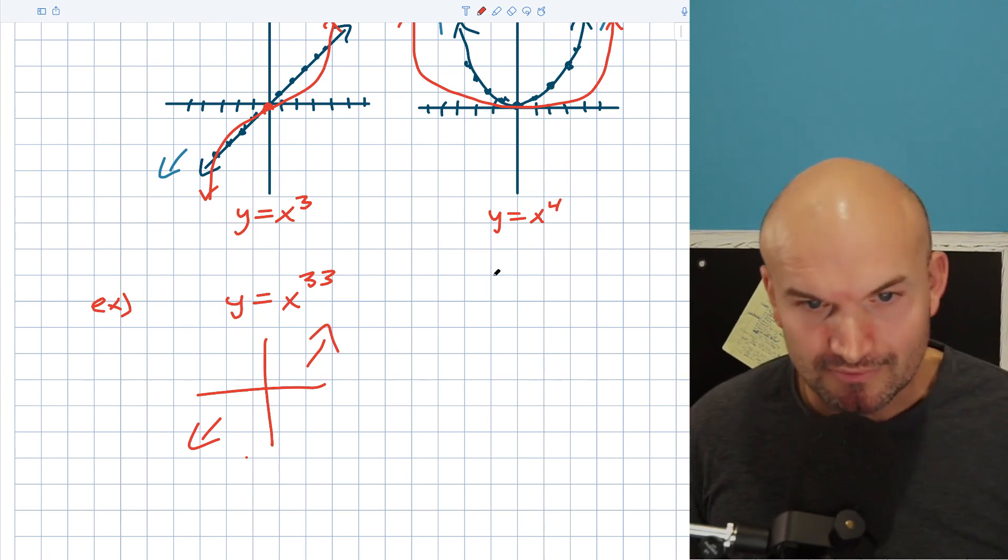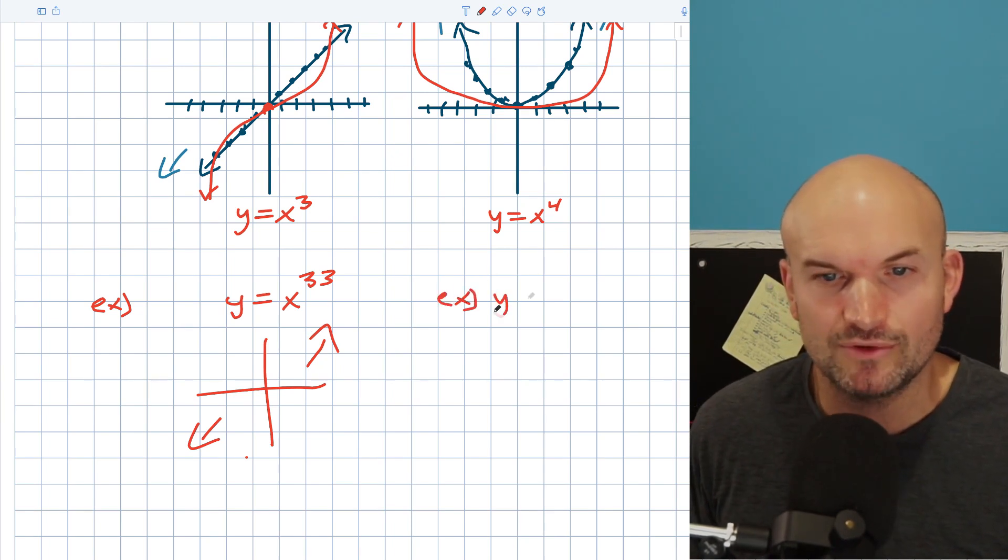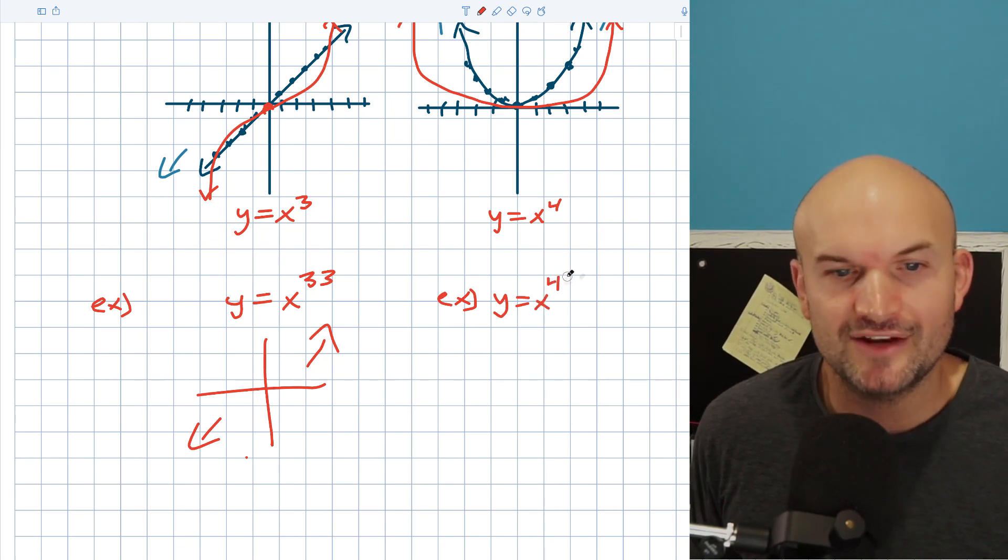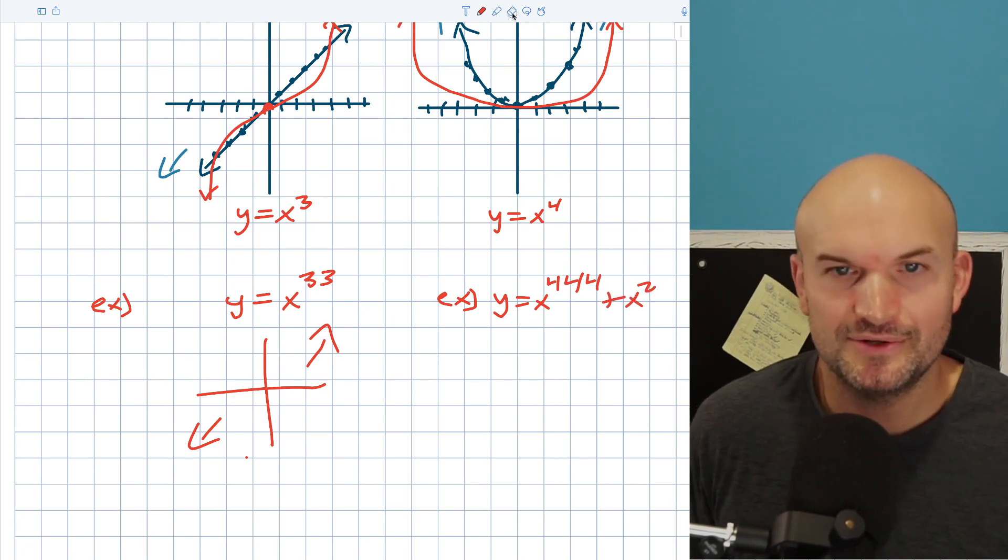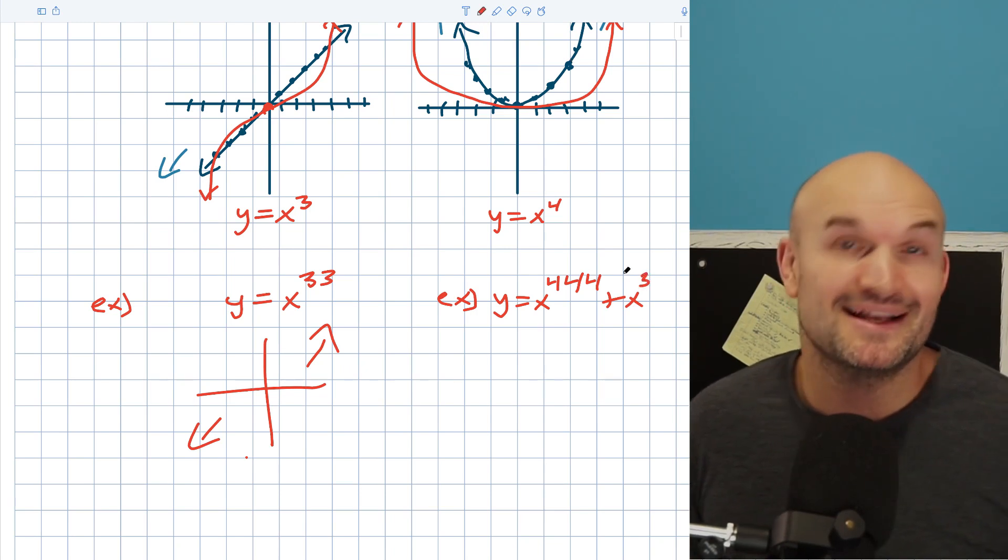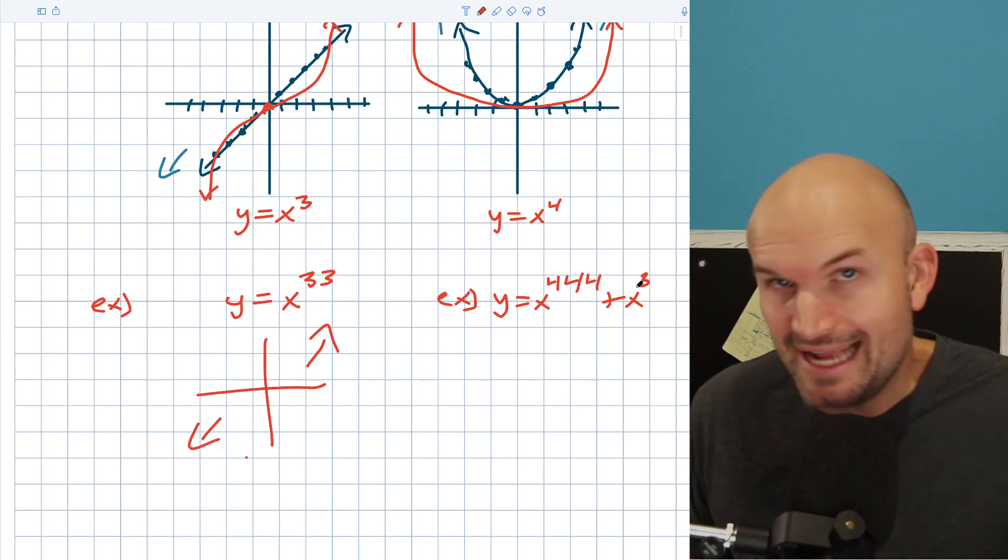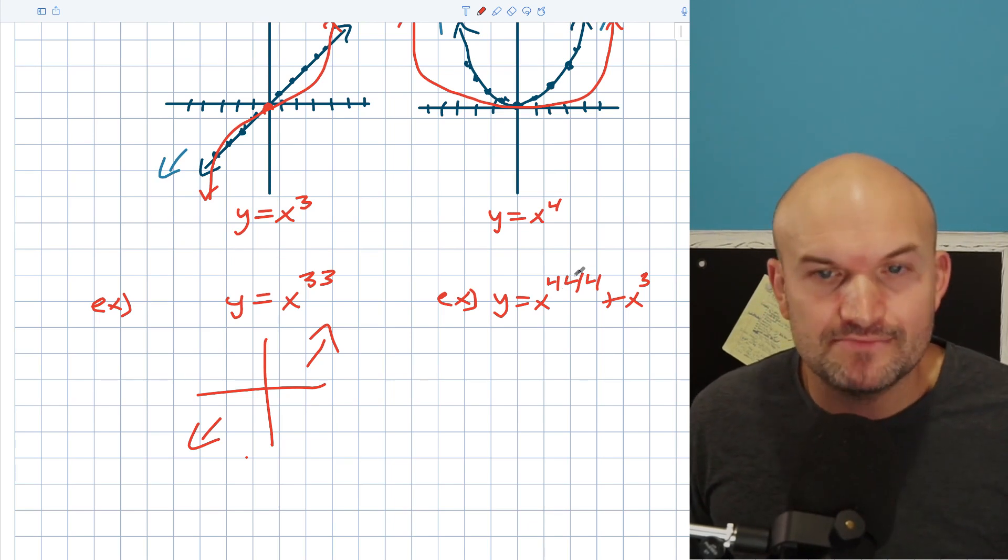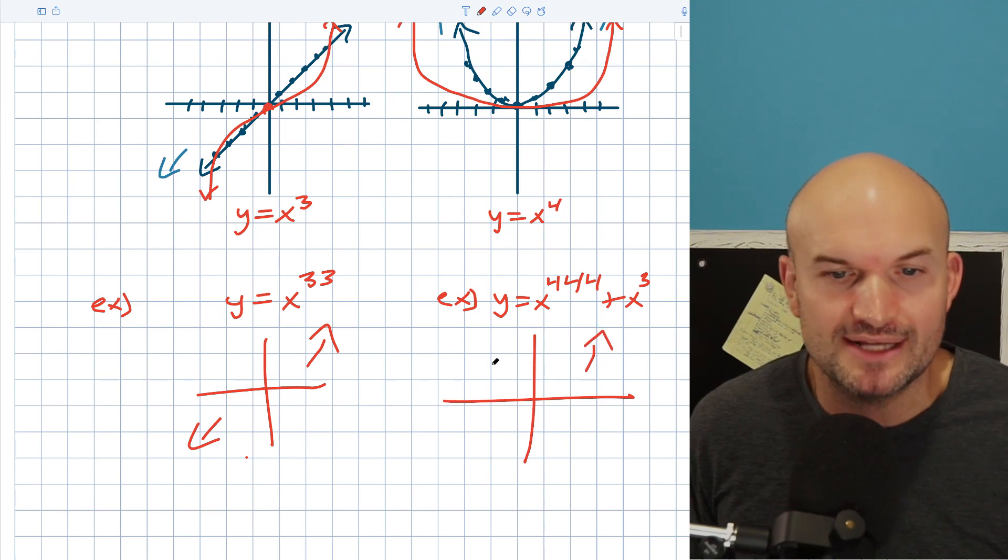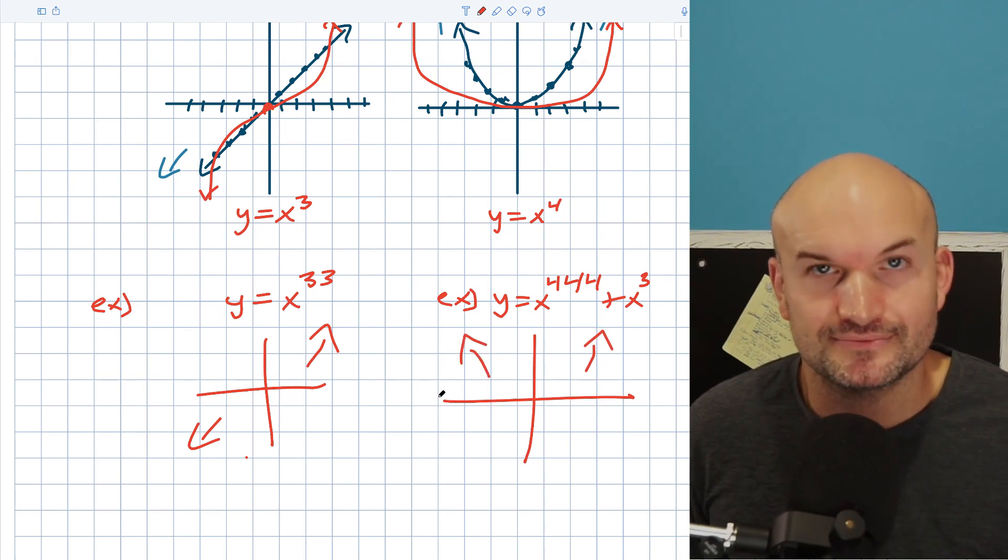And what about if I had something like this, what about if I had y equals x to the 444th, and then plus an x cubed? Now, again, remember the degree is the highest power. So we don't care about any other powers that are inside of a polynomial. We only care about the highest. And in case this polynomial here is even, then therefore we know what the end behavior is. The end behavior is going to rise to the right and rise to the left. And that's it.